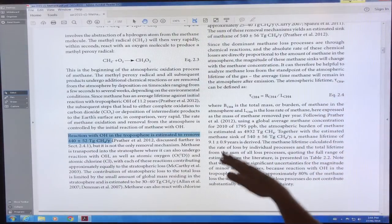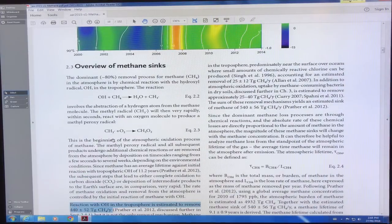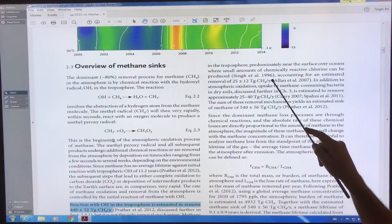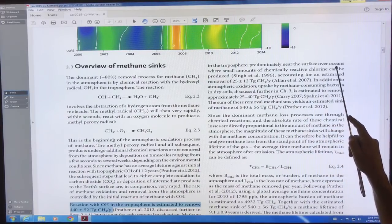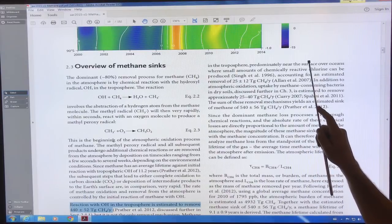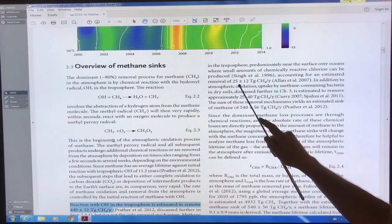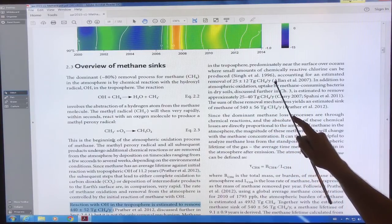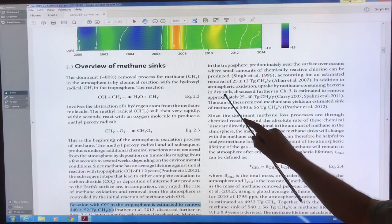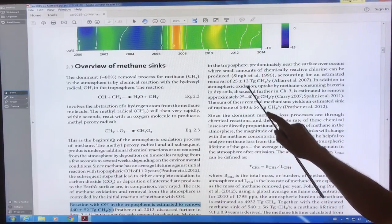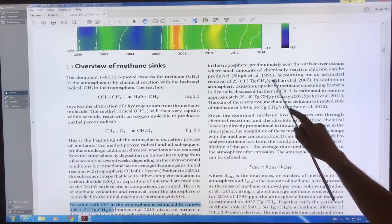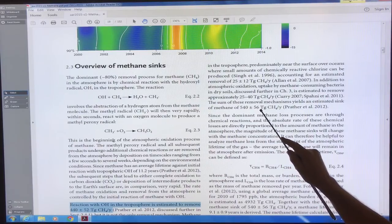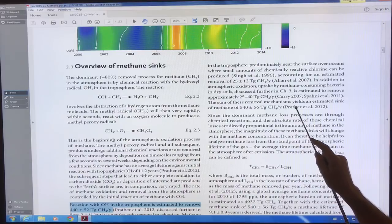Now the methane could also react with chlorine in the troposphere, predominantly near the surface over oceans. There's chemically active reactive chlorine produced in small amounts near the surface of the oceans. That can remove about 25 plus or minus 12 teragrams of methane per year. There's also methane consuming bacteria in dry soils, removing about the same sort of amount 25 to 40 teragrams. So if you add all of these removal mechanisms, you get a sink of methane of 540 plus or minus 56 teragrams of methane per year.